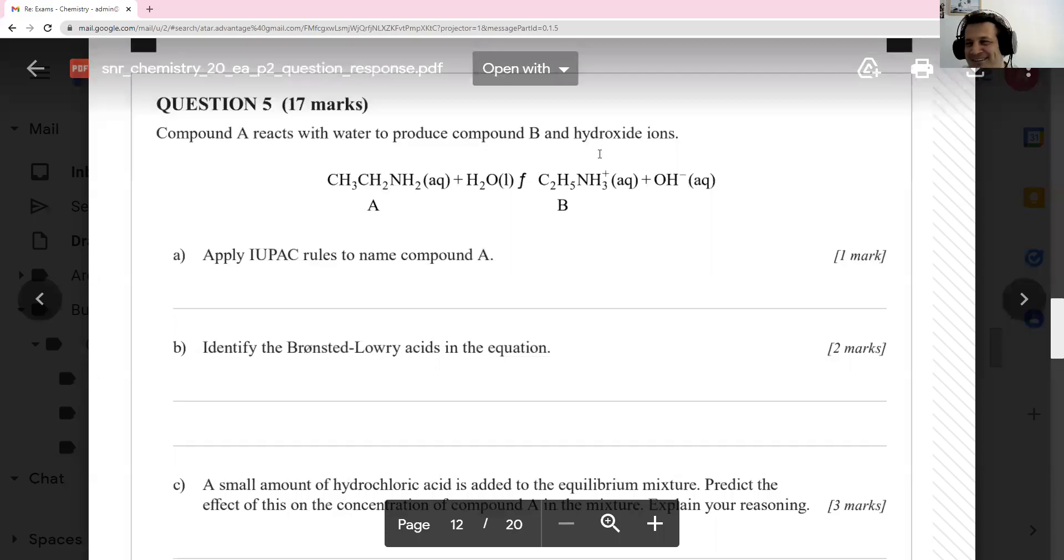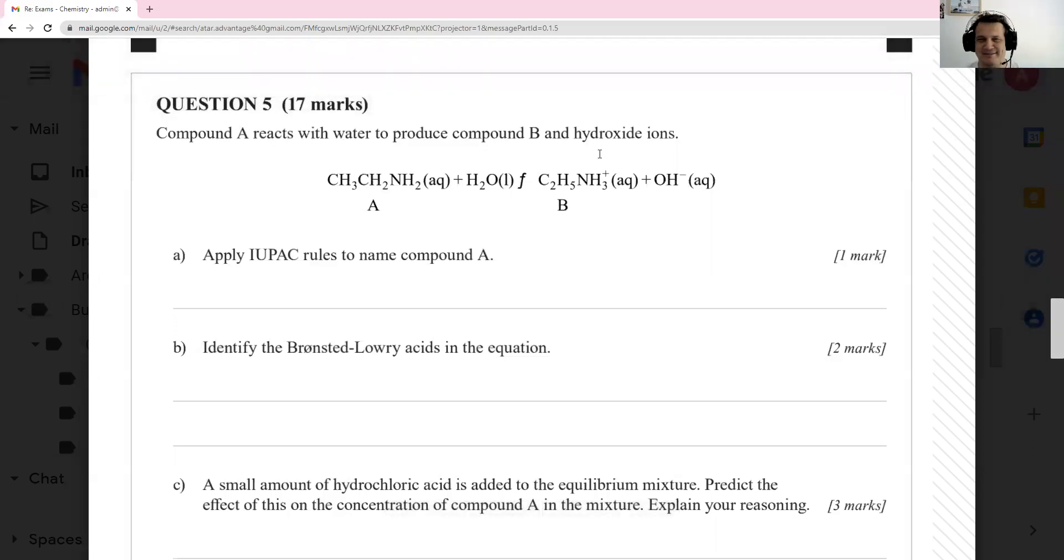Another easy six marks. So the first compound, compound A, it's got nitrogen, it's got hydrogen, but it doesn't have an oxygen, so it has to be an amine. It's got two carbons, call it ethane amine.